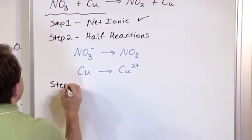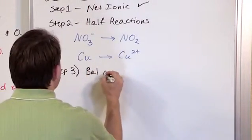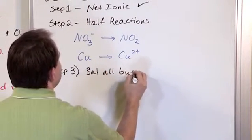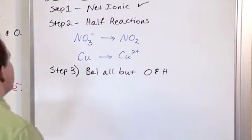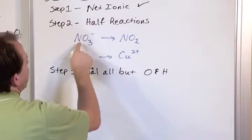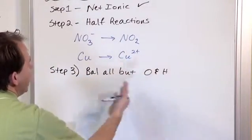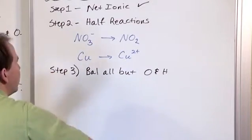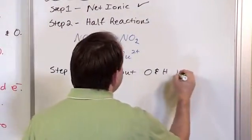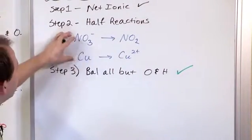Step three. Balance all but oxygen and hydrogen. That is our next step in our list. And we look at this and we see the nitrogen's already balanced, the copper's already balanced. So everything is already balanced except for this. So this is one of those exceptions where I don't think you need to write it down again. We'll just put a check mark to tell us that we believe that that's already done.